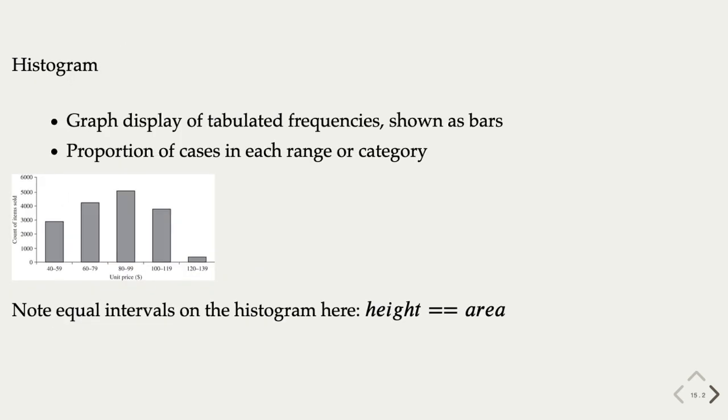A histogram is a graphic display of frequencies in a number of ranges or bins. Because of the bar representation, this is very similar and sometimes equivalent to a bar chart. The histogram here is indeed a bar chart, where the ranges have equal intervals. That is, each bar is about the same $20 range. If the ranges are not uniform, however, this cannot be interpreted as a bar chart. Because in a histogram, what matters is the area of the bar, not the height. And with non-uniform ranges, the height is different from the area of a bar.